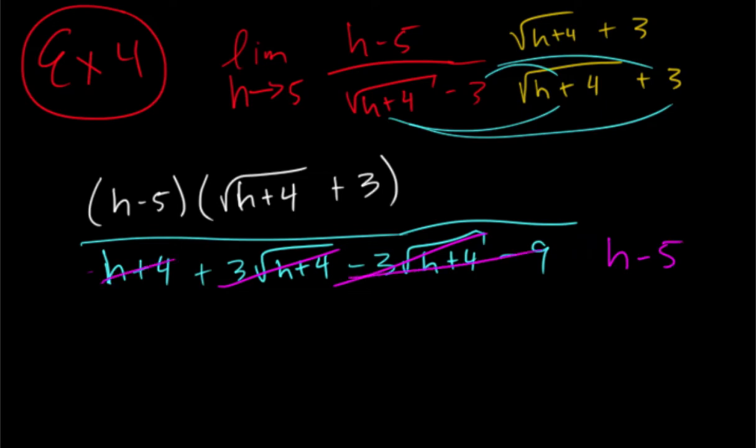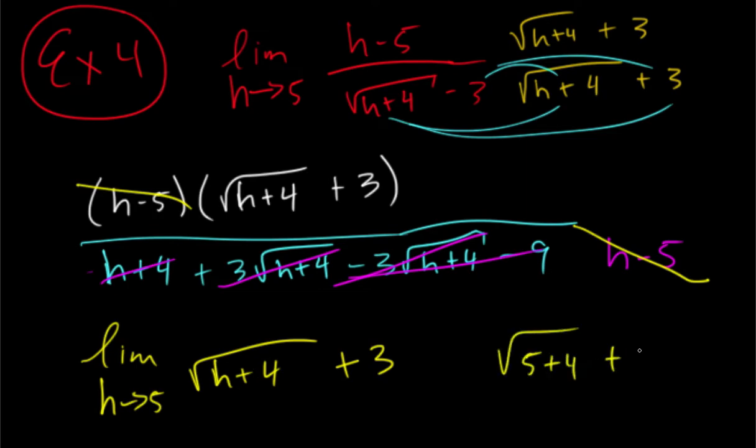Okay, now on the top, we can cancel the h minus five because our entire bottom is h minus five. And now we can just try that limit again. Plug in a five. We get square root of nine plus three, which is three plus three. And so our limit is six.